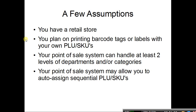Most point of sale systems — you'll want to double check on this — will allow you to have multiple numbers associated with the same product. So you can have the manufacturer's part number or UPC number plus your own internal number. This also assumes you've gotten a point of sale system that can handle at least two levels of departments and/or categories.